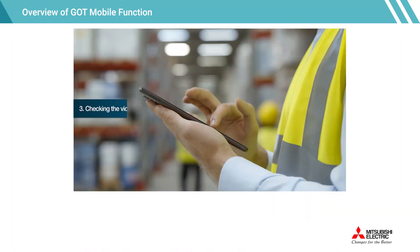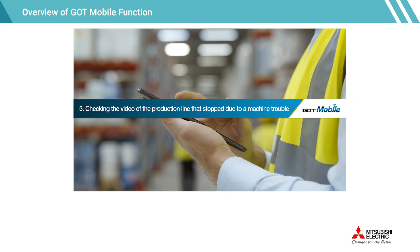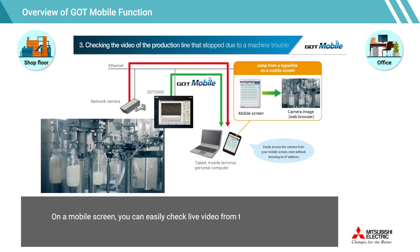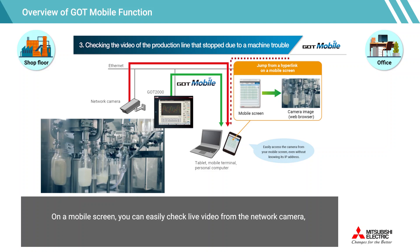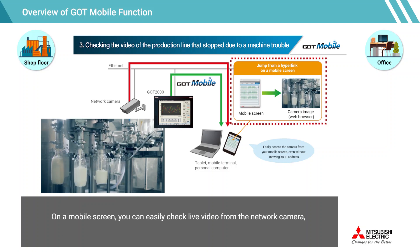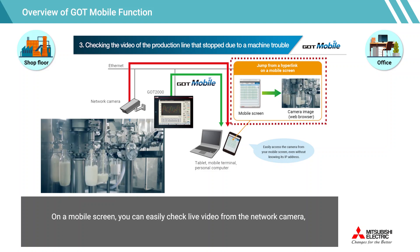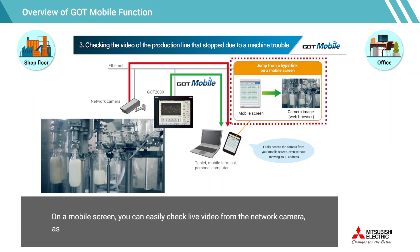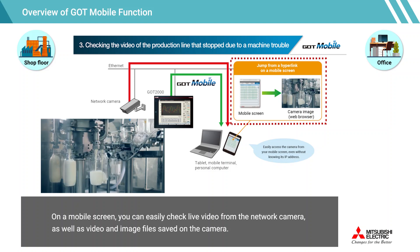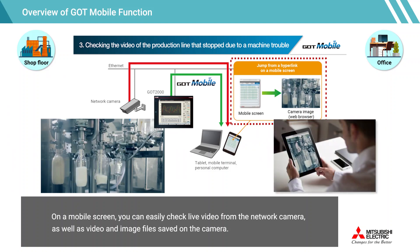For checking the video of a production line that stopped due to machine trouble, on a mobile screen you can easily check live video from the network camera, as well as video and image files saved on the camera.